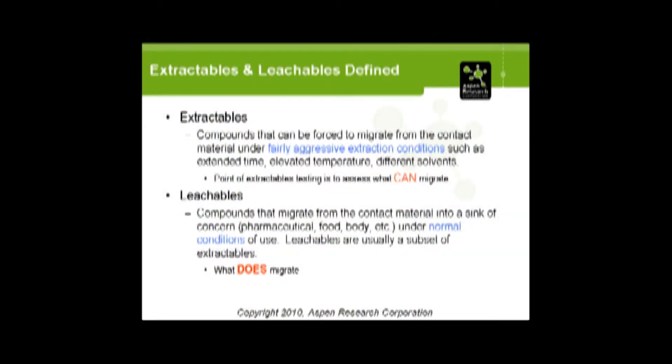A leachable, on the other hand, is a compound that does migrate under conditions of normal use — perhaps during a stability study for pharma, or if something is placed into your body that actually does migrate from the polymer into the body. So extractables is a set of studies done to determine what might move from the polymer into, say, the body or food. And a leachable, in fact, is what actually does migrate.